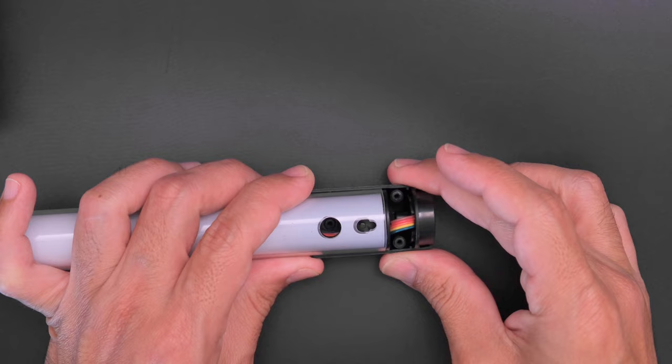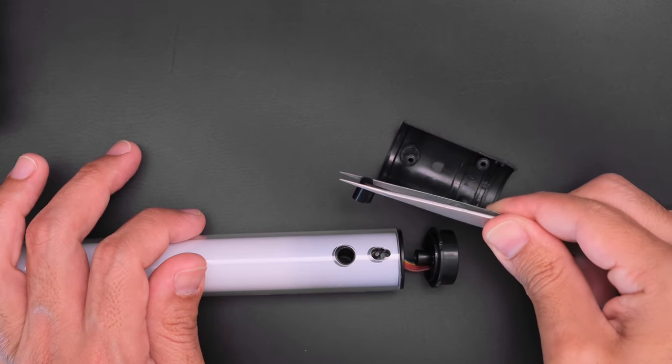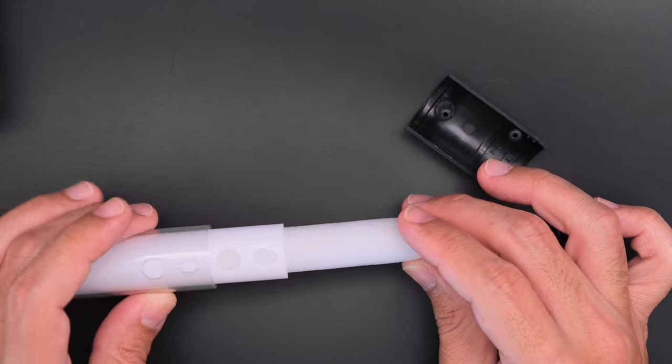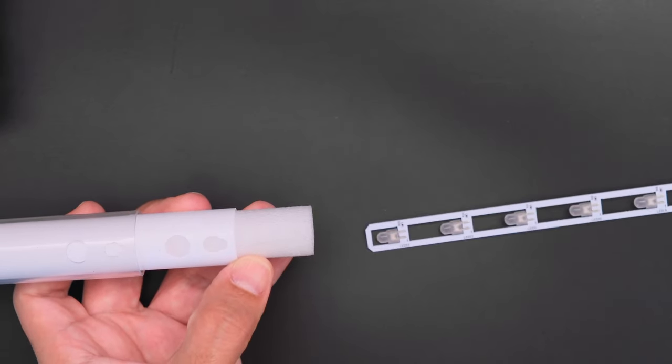Take apart the blade by removing the screws from the pogo pin connector then remove the plastic pin from the tube. Carefully slide out the diffuser and take out the LED PCB while keeping the cover and diffuser inside the tube.